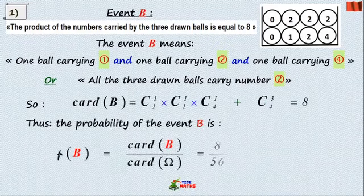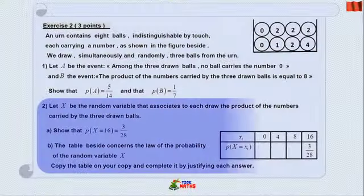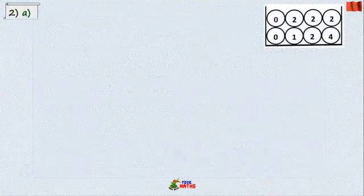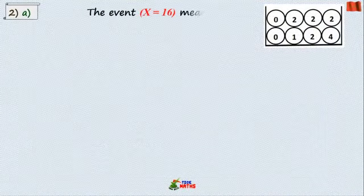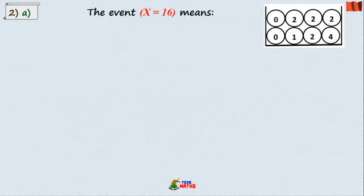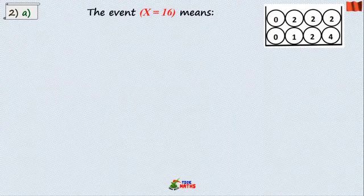In question two, the random variable is associated to the product of the numbers carried by the three drawn balls. So its possible values are zero, four, eight, sixteen. The event X equals sixteen.